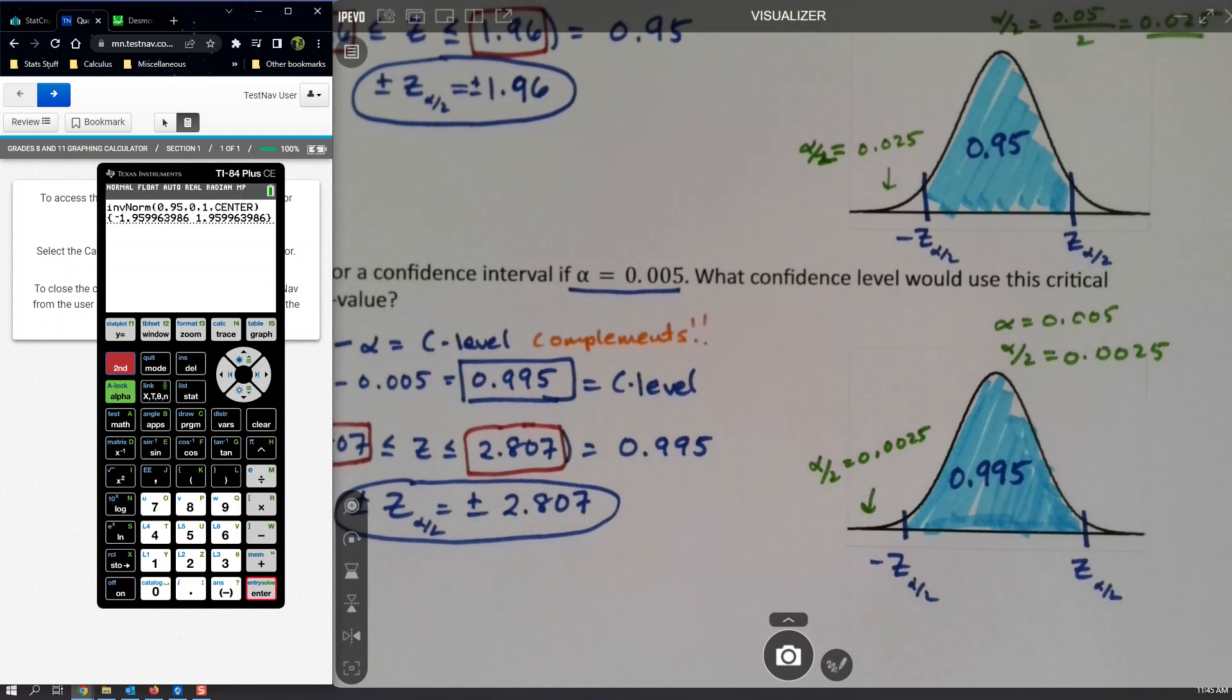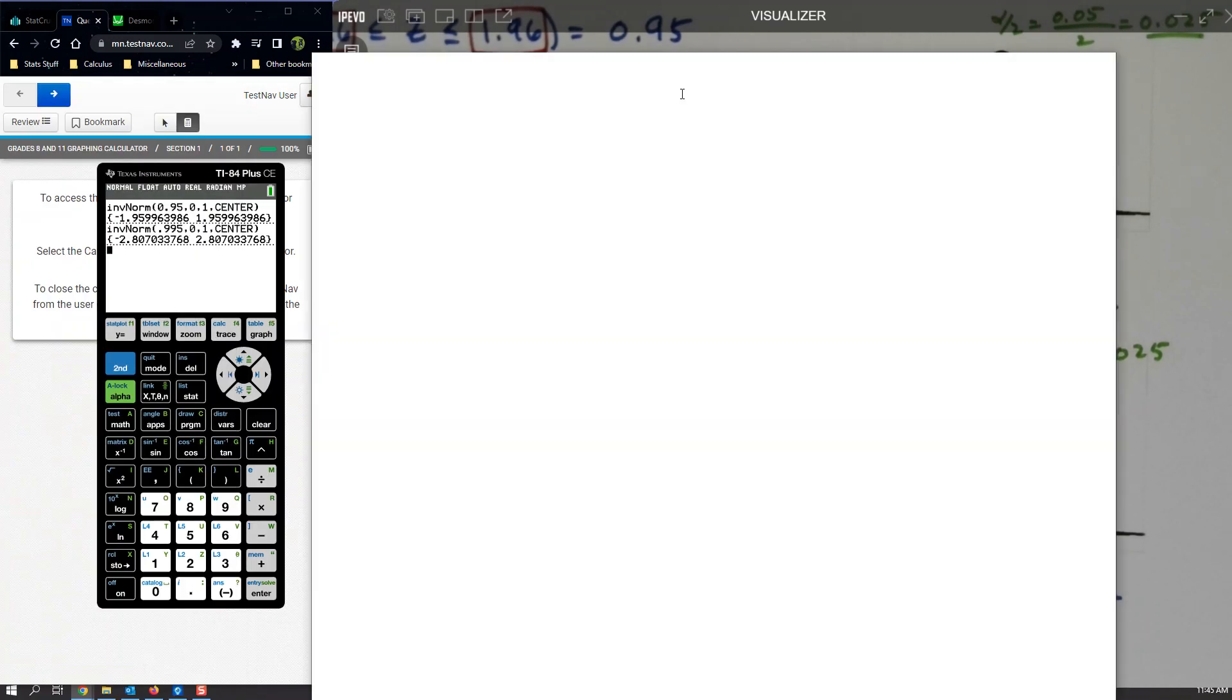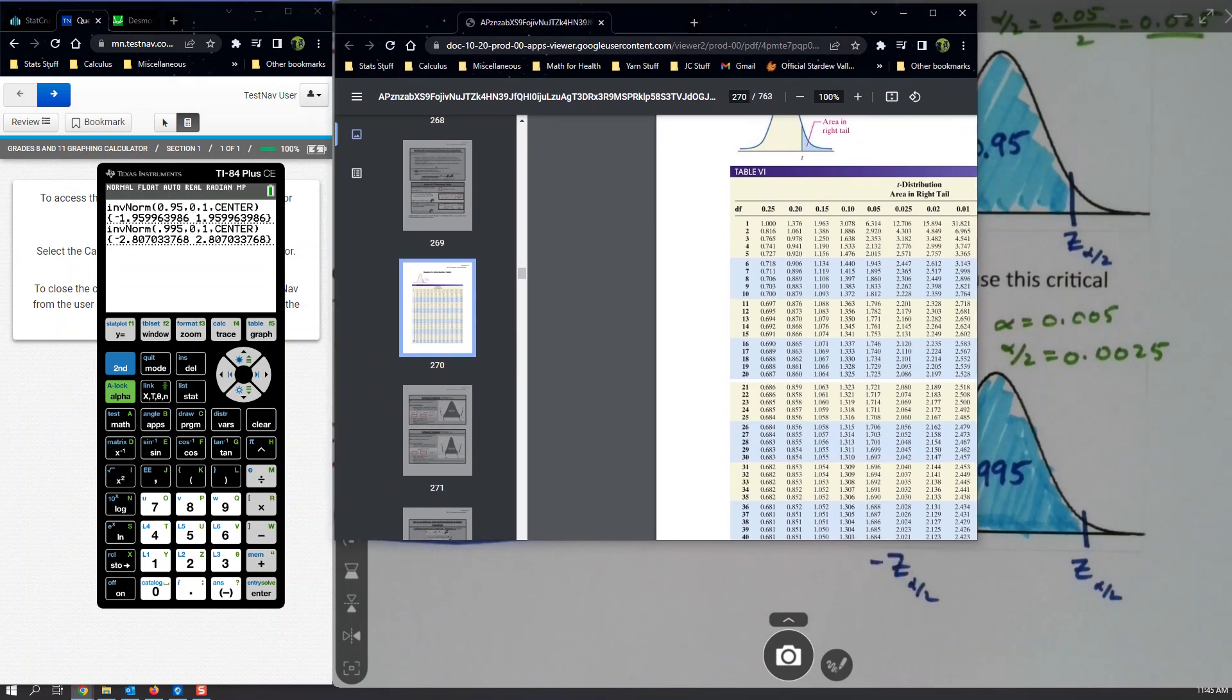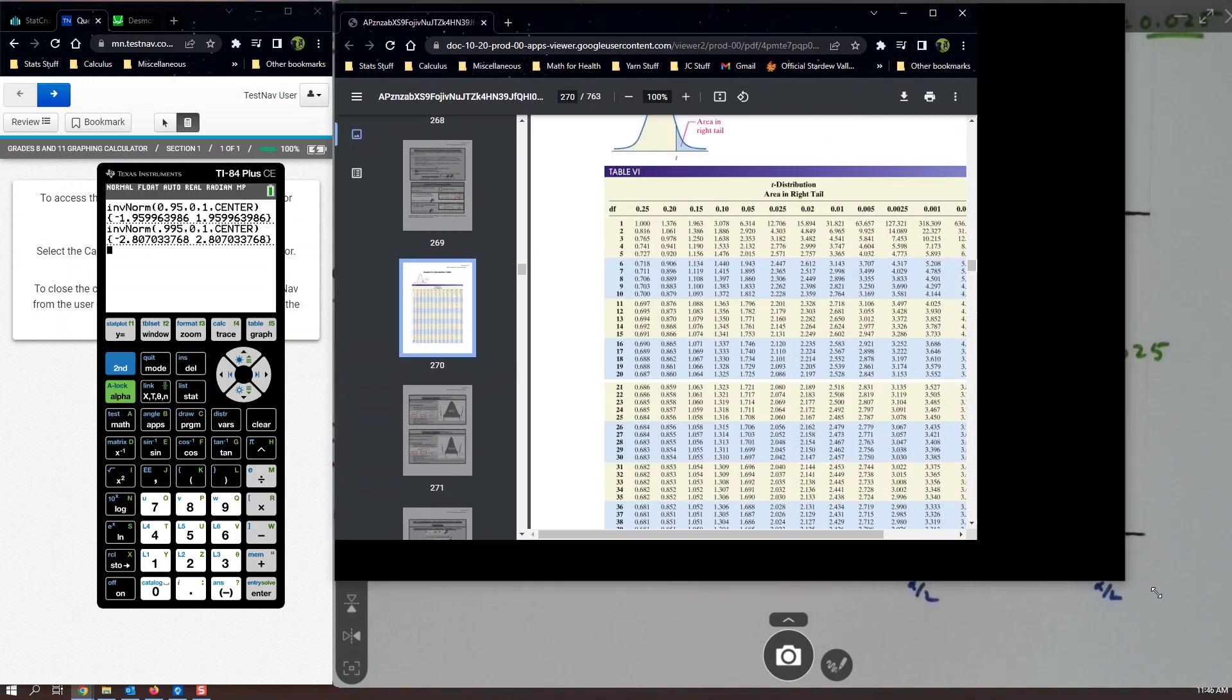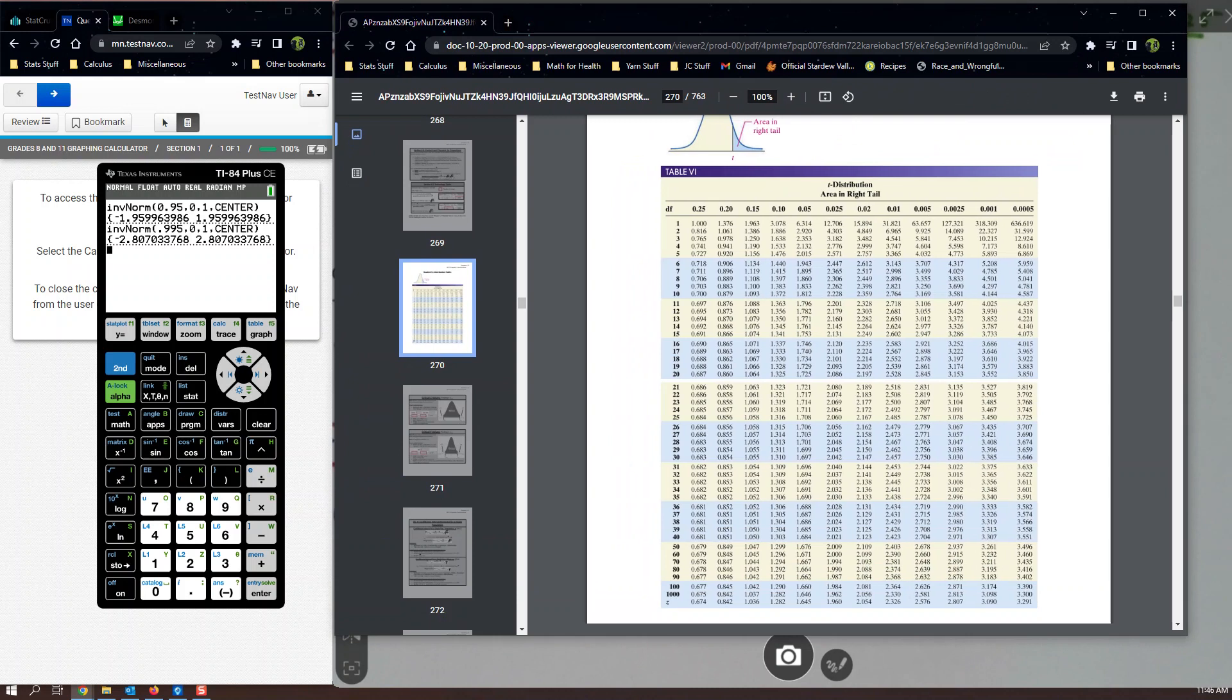If you have a newer calculator, it's easier. Because you can just say, hey, I want 0.995 and tell it center, and it'll be fine. There they both are. Right? So, newer calculator versus older calculator is different. Now, the table uses the alpha over 2 as well. So, if you have the table, let me bring it in so you can see it.